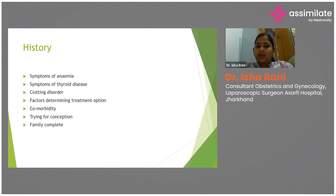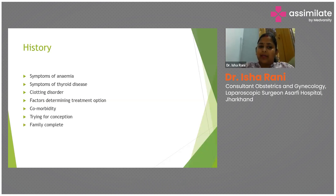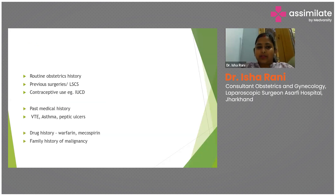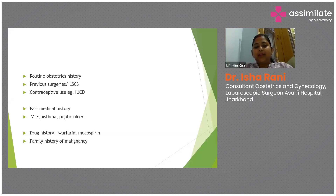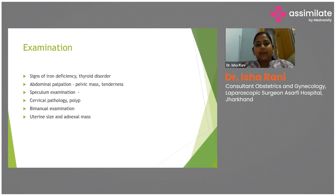Along with this history, ask about other comorbidities, long-term medications, and whether the patient is trying for conception or has a complete family — this helps determine appropriate treatment. Routine obstetric history should be taken, including previous surgeries, number of cesarean sections, and use of contraception such as an intrauterine contraceptive device. Past medical history of venous thromboembolic events, asthma, and peptic ulcers should be noted, along with drug history of warfarin or aspirin, and family history of gynecological or colorectal malignancy.